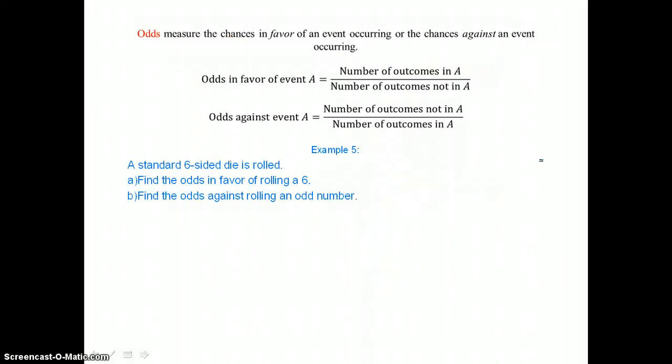Odds measure the chances in favor of an event occurring or the chances against an event occurring. Odds in favor of event A is the number of outcomes in A divided by the number of outcomes not in A. The odds against event A is the number of outcomes not in A divided by the number of outcomes in A. So they're just reciprocals of one another.